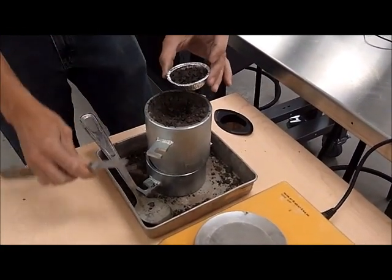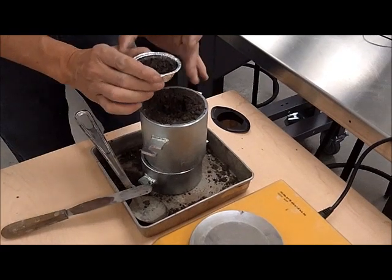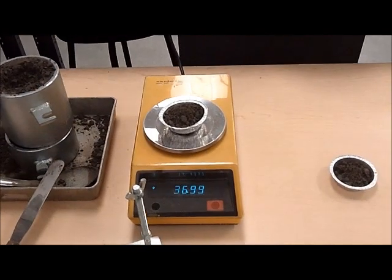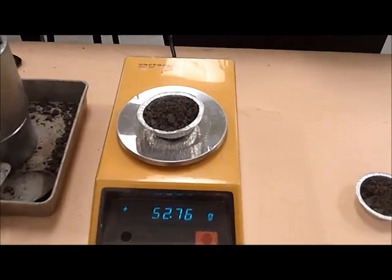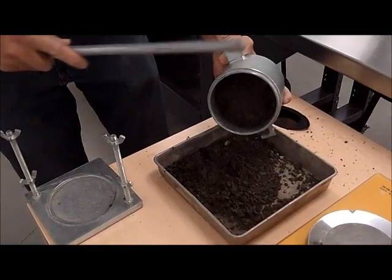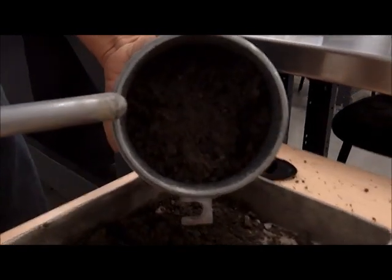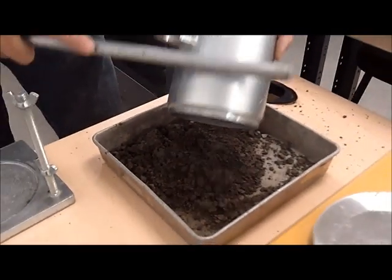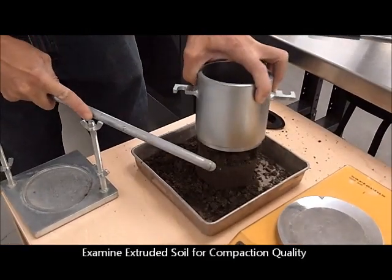This granular material is fairly workable and clean. If you do the proctor test on a clay material, it would be a lot more challenging. Removing the material out of the cell, and in the case of granular material, it's fairly easy to do that, because the material basically, as you tap it, it will come apart.